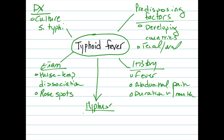Unlike typhoid fever, typhus is a rickettsial disease, and as such it is not spread by the fecal-oral route due to poor sanitation practices. This disease also has characteristically high fevers, although the pulse-temperature dissociation, also known as Faget sign, is classically not present for typhus. Other findings include a rash, but this rash will differ from the classic rose spots seen in typhoid fever, and often these patients will also have photophobia.